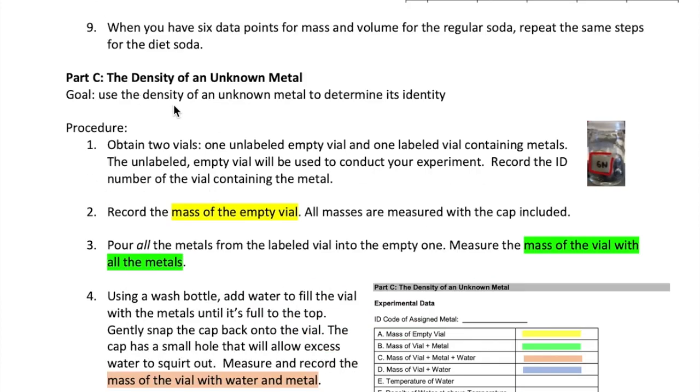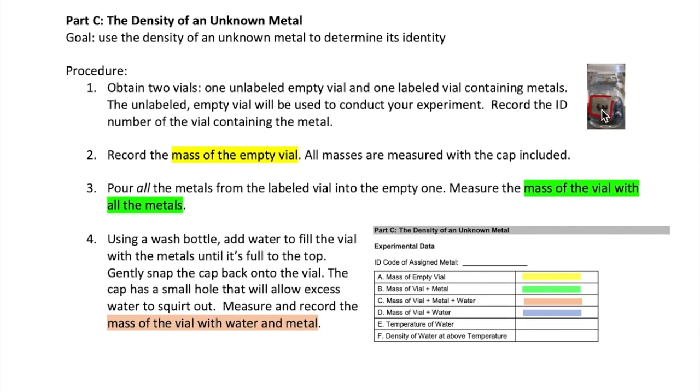Let's move to part C now, which is about using the density of a metal to determine its identity. Start by getting two vials from the instructor bench. One vial contains some metals in it and has a label as shown here. And the other vial should look the same but it's empty and it's unlabeled. The first thing to do is to record the ID code on the vial in your lab report here.